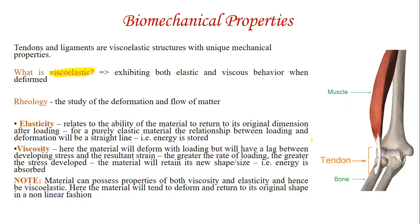If we look at the word viscoelasticity, it consists of two words: viscous and elasticity. Elasticity is the ability of a material to return to its original dimension after loading. Viscosity is the property in which a small amount of load results in quite a bit of deformation, present in fluids that exhibit friction as layers slide over each other. The basic difference is that in elasticity, energy is stored, but in viscosity, energy is absorbed.